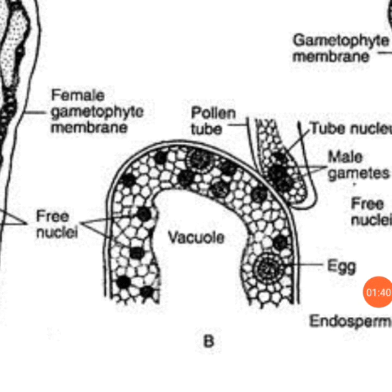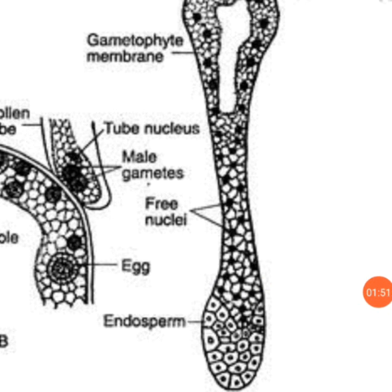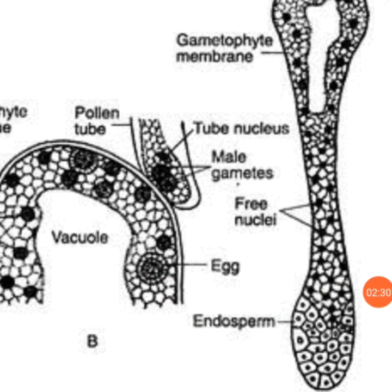Unlike angiosperms, distinct archegonia are not formed in Netum. However, the cellular female gametophyte gives rise to endosperm — in figure C you can see the lower part where wall formation between the nuclei leads to endosperm formation. Cytologically, some endosperm cells are uninucleate while others are multinucleate.